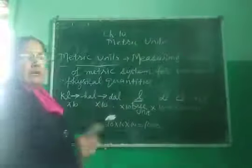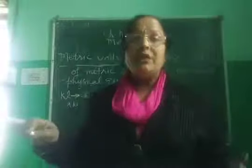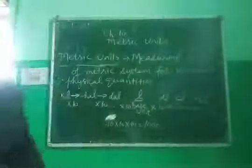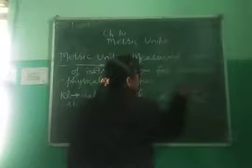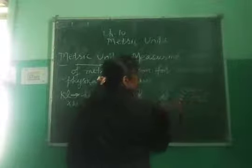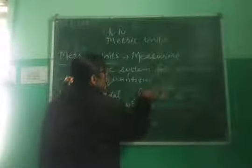When a smaller unit is being converted into a bigger unit, we divide. When milliliter is being converted into centiliter, we divide by 10. When centiliter is being converted into deciliter, we divide by 10. When deciliter is being converted into liter, again we divide by 10.